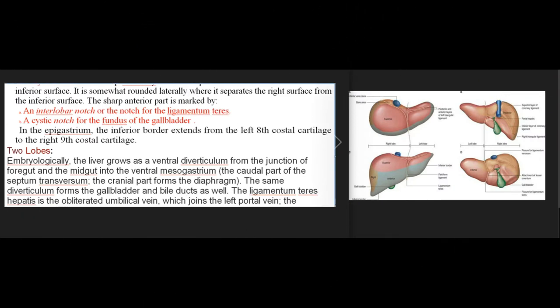The sharp anterior part of the inferior border is marked by an interlobar notch for the ligamentum teres and a cystic notch for the fundus of the gallbladder. In the epigastrium, the inferior border extends from the left 8th costal cartilage to the right 9th costal cartilage.